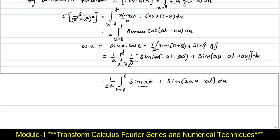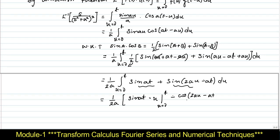Integrating these two terms with respect to u: the integral of sin(at) with respect to u is sin(at)·u (since sin(at) is constant), evaluated from 0 to t. The integral of sin(2au − at) is −cos(2au − at)/(2a), evaluated from u=0 to t.